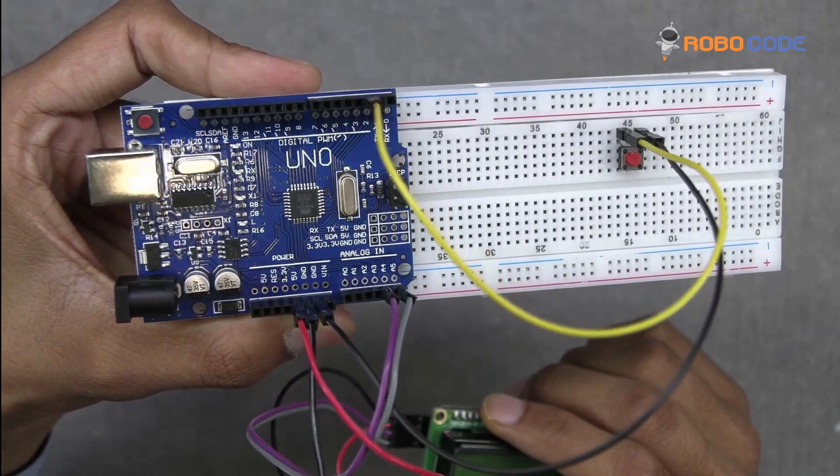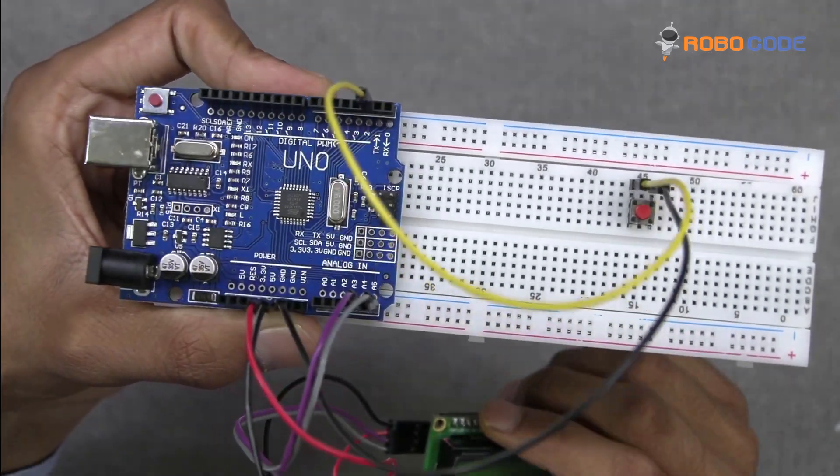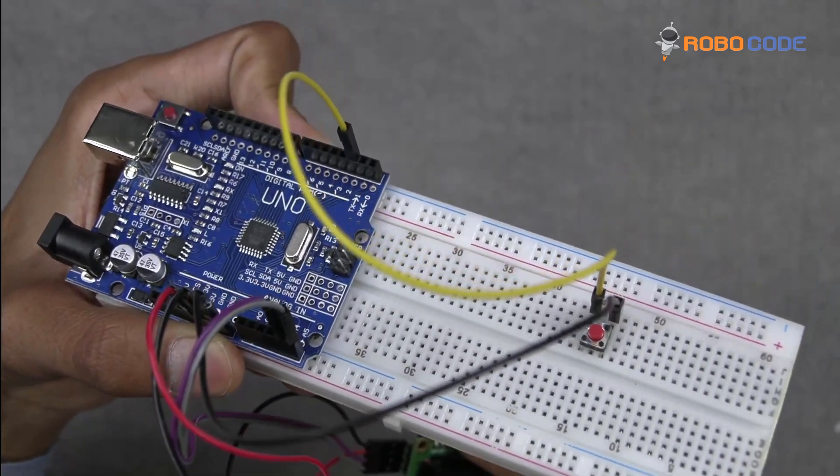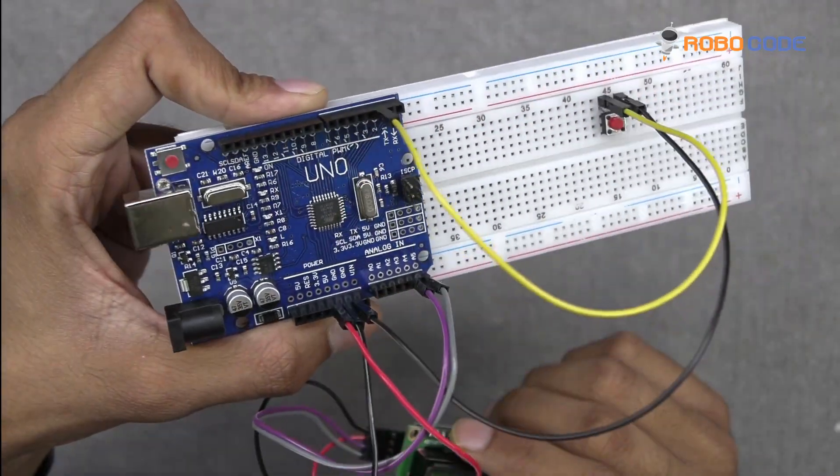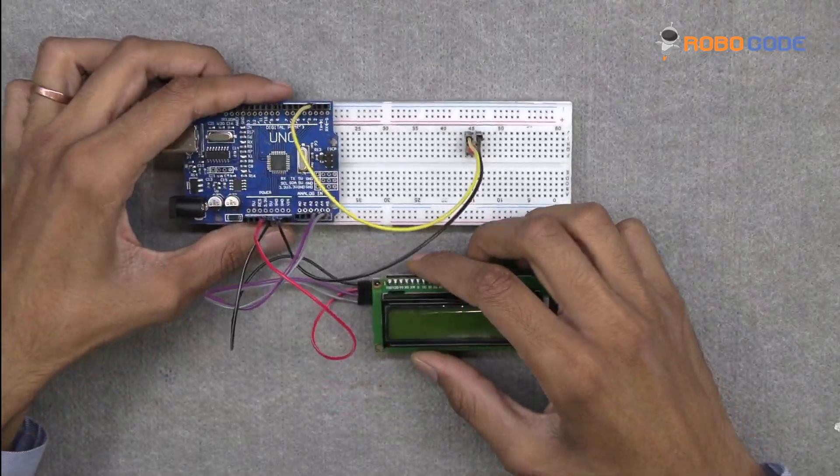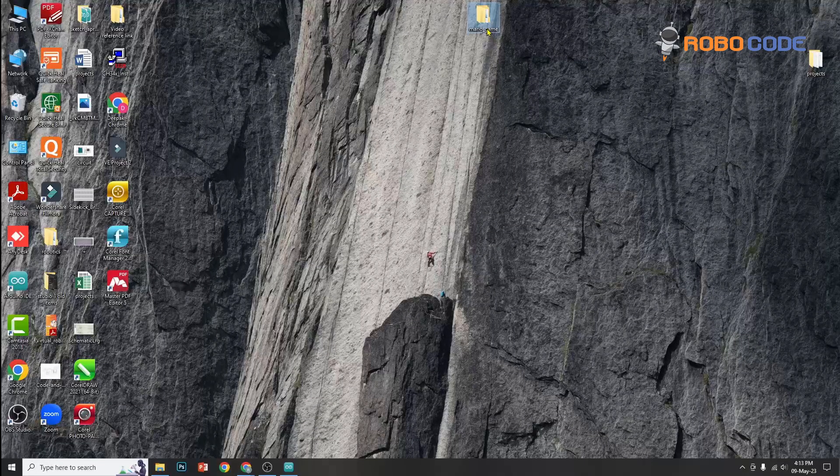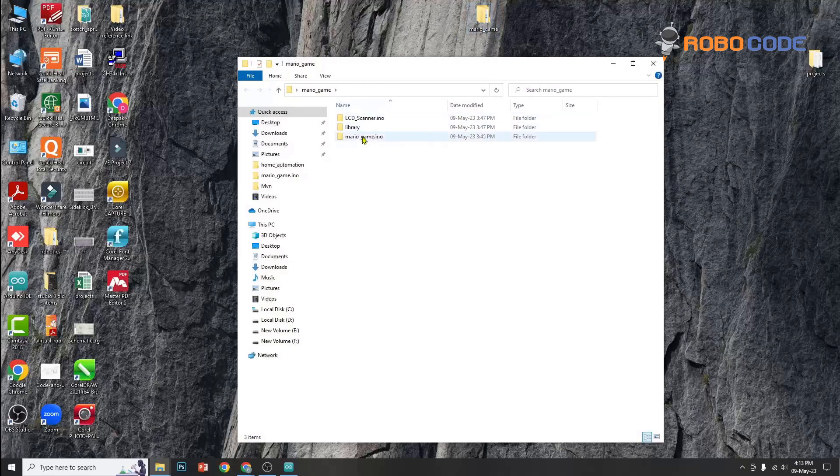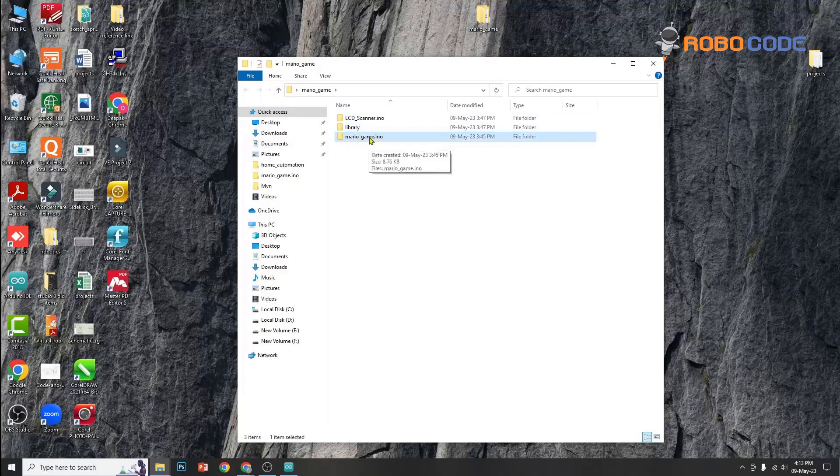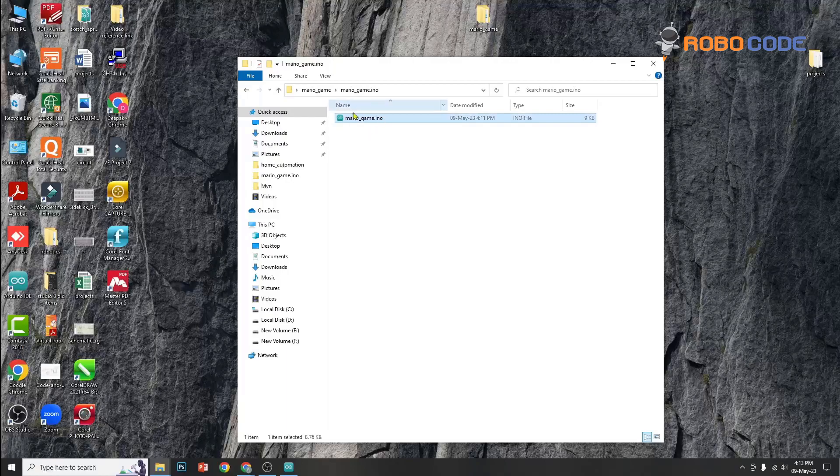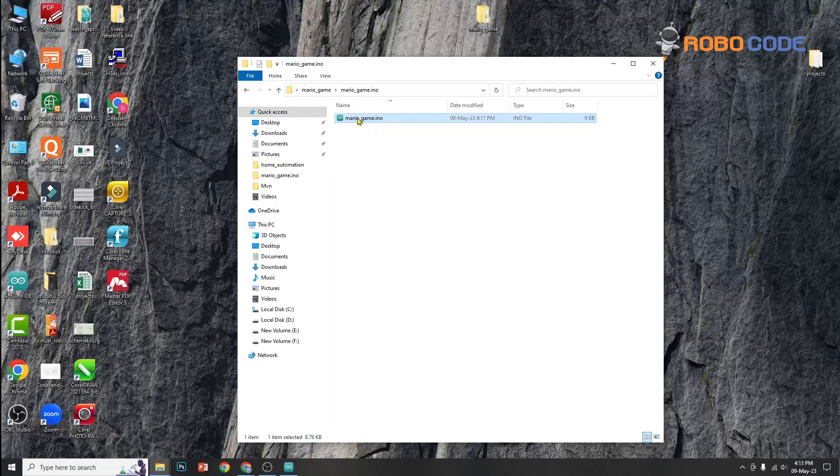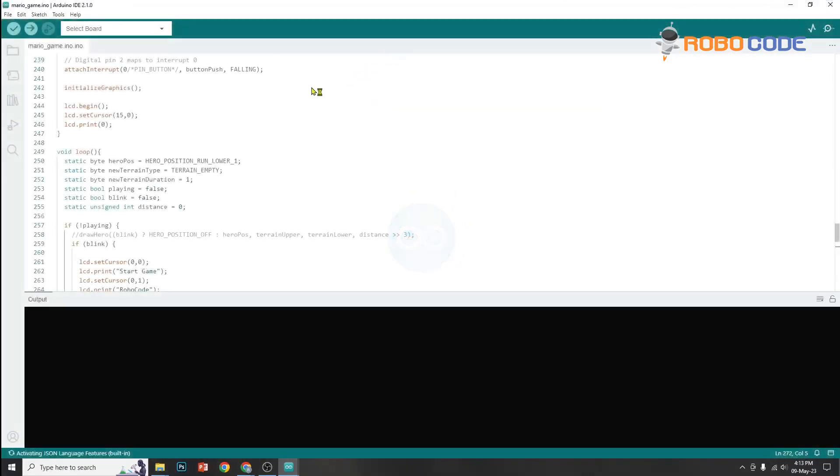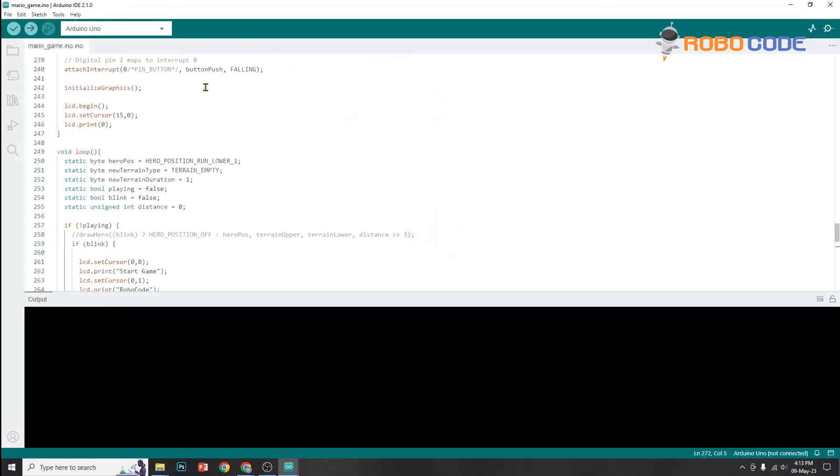So this is how we make the connection. Now we will insert the USB cable and upload the code. In the description, we have given you the link in which you can download the code. Once it is downloaded, you can extract and then locate that folder. You can double-click the mario_game.ino file. If Arduino IDE is installed, it will open up and you can see the code.